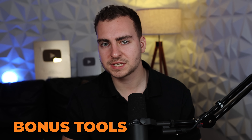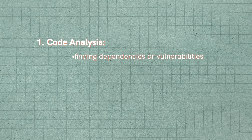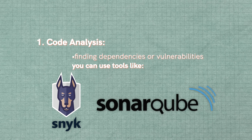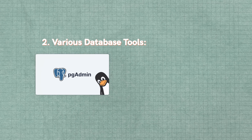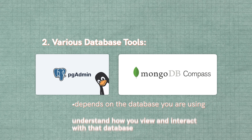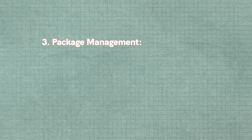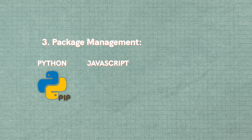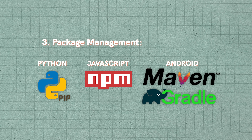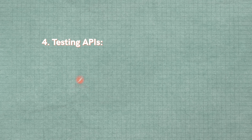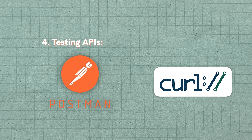For those who made it to the end, here's a quick speed run of additional tools to consider. For code analysis — finding dependencies or vulnerabilities — you can use tools like Snyk or SonarQube. For database tools, things like PG Admin or MongoDB Compass help you view and interact with your database outside of just a programming language. For package management: Python uses PIP, JavaScript uses NPM, and Android uses Maven or Gradle. For testing APIs, a great tool I use all the time is Postman — you could even include curl, which is the command-line variant.